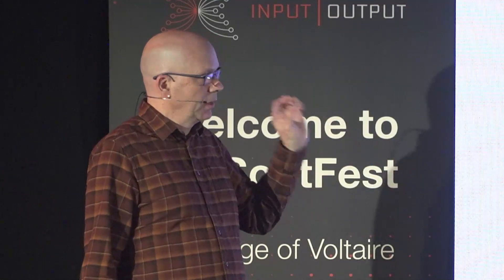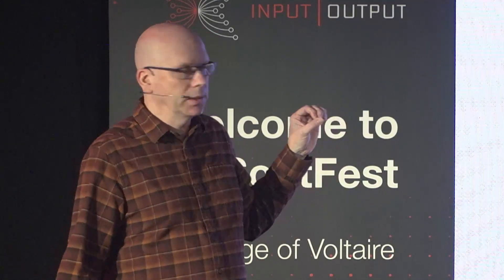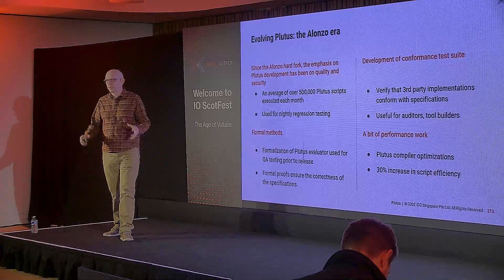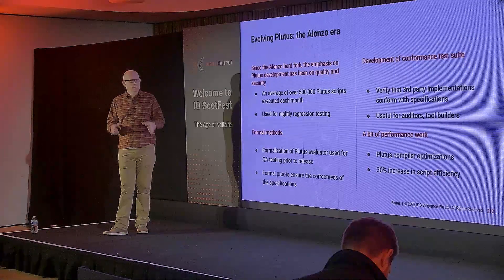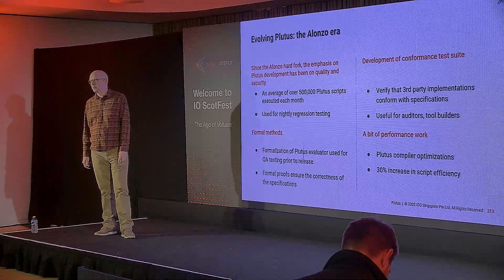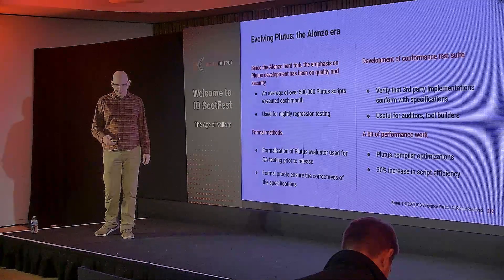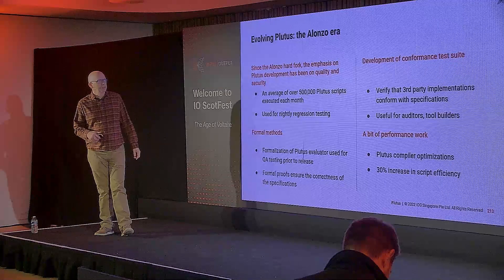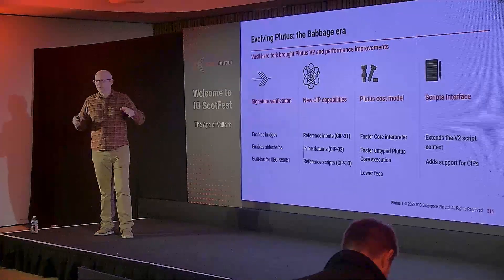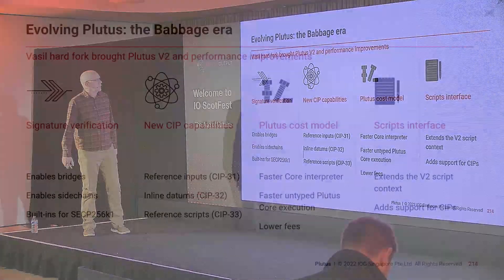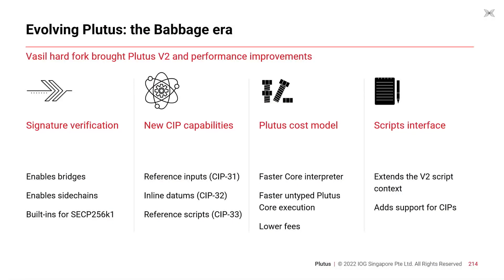We've managed to slip in a little bit of performance work in the last year. The Plutus compiler has been optimized and we've been able to squeeze about 30% additional efficiency out of the Plutus scripts. Now the Babbage era — we've just had the Vasil hard fork, which brings us into the Babbage era. This is where Plutus V2 comes in — this is the meat of the talk.